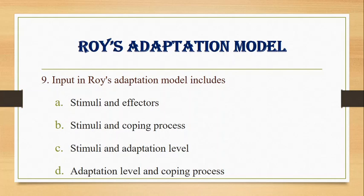Number 9. Input in Roy's adaptation model includes: A. Stimuli and effectors, B. Stimuli and coping process, C. Stimuli and adaptation level, D. Adaptation level and coping process. Answer: C. Stimuli and adaptation level.